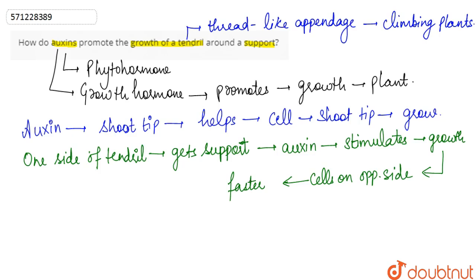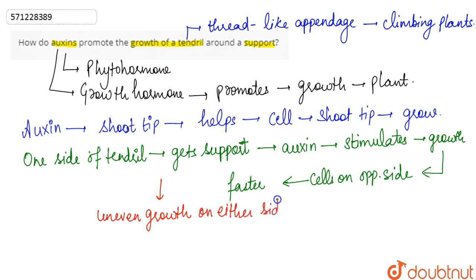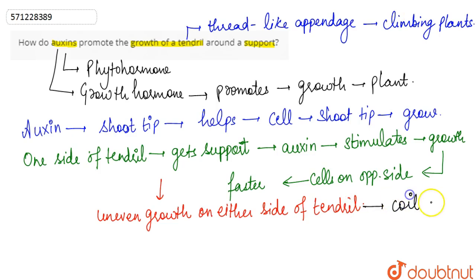This condition leads to uneven or unequal growth on either side of the tendril. Because of this, the tendril forms a coil-like structure around the support.